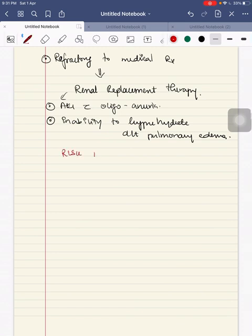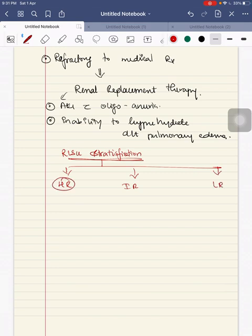There is risk stratification for tumor lysis syndrome. This risk stratification is mainly done according to the tumor they have. I am not going into the detail of this risk stratification. It can be classified into three: high risk, intermediate risk, and low risk.